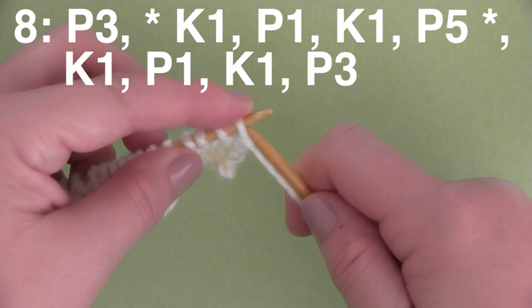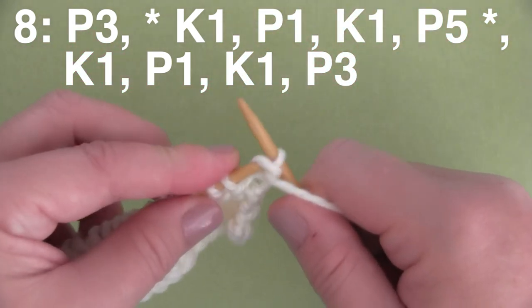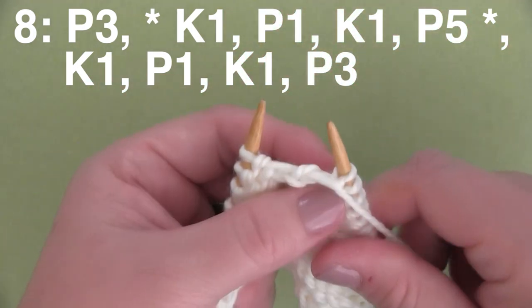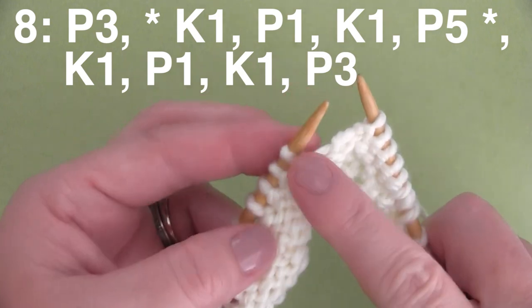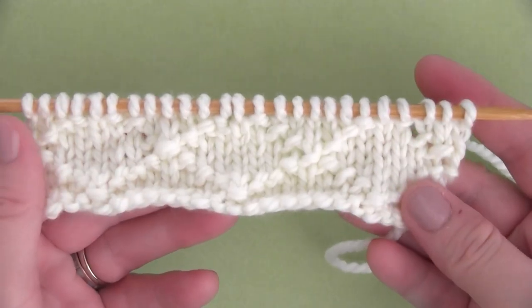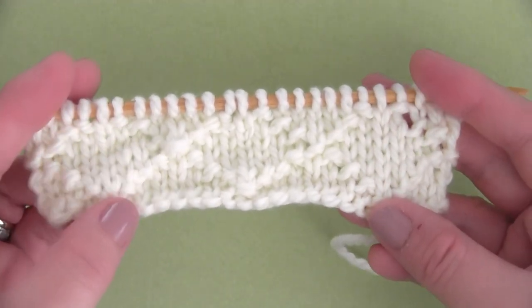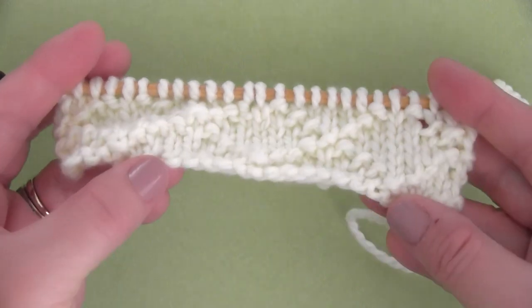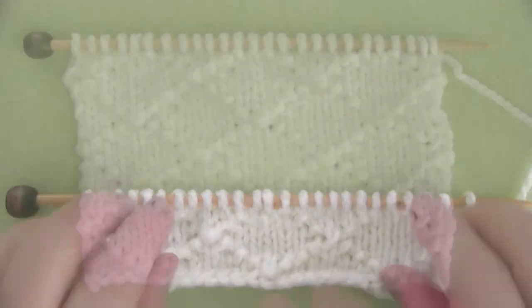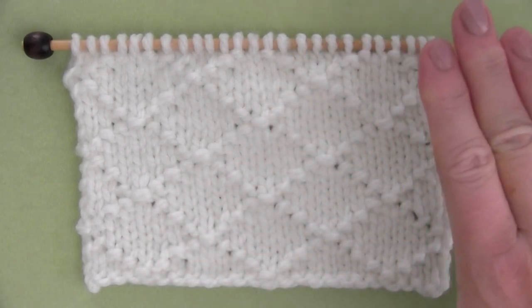Our last row, Row 8 of our 8 Row Repeat, we are doing exactly what we did on Row 2. So you just follow the pattern all the way until you finish up Row 8. And here is how the 8 rows, our little diamond pattern, turns out it looks really pretty. And you just continue repeating those 8 rows until your piece is the length that you desire.